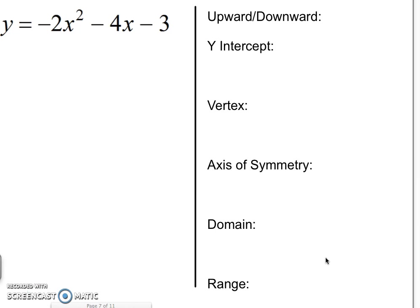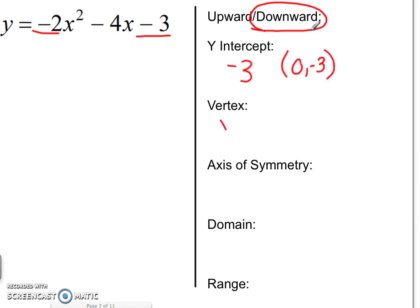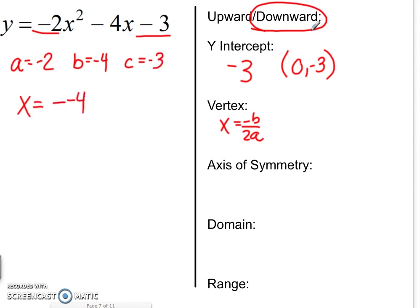Now let's look at when a is negative and see how that changes the graph. If a is negative, the parabola opens downward. The y-intercept is at the end — so write 0 comma negative 3, or just negative 3. For the vertex, use x equals negative b over 2a. So a was negative 2, b was negative 4, and c was negative 3. x equals negative negative 4 over 2 times negative 2 — two negatives is a positive on top, and 2 times negative 2 is negative 4, giving us negative 1.